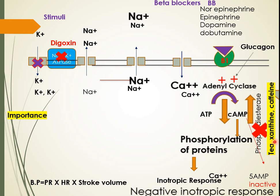If a beta blocker overdose or beta blocker poisoning occurs, glucagon can be used. Glucagon goes transmembrane and directly stimulates cyclic AMP, bypassing the blocked beta receptors. Therefore, glucagon is used in the management of beta blocker poisoning.